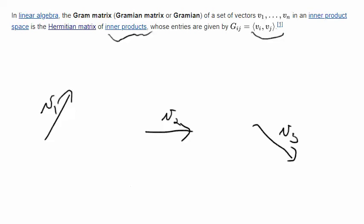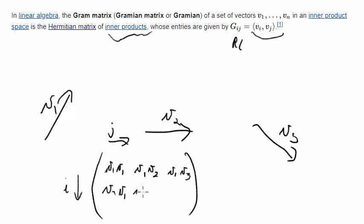So I feel like this should be row comma column, so we'll say the matrix goes i goes this way, j goes this way. V1 V1, V1 V2, V1 V3, V2 V1, V2 V2, V2 V3, V3 V1, V3 V2, V3 V3, and these would all be dot products of each other.